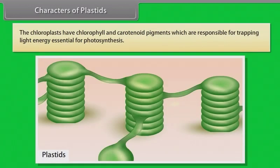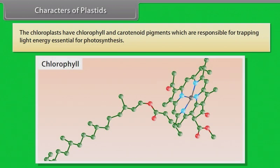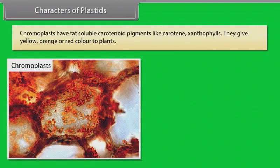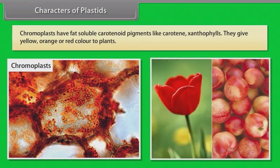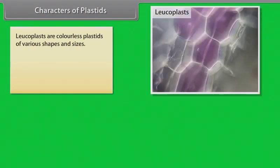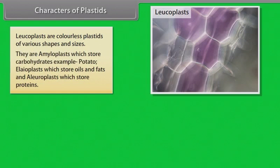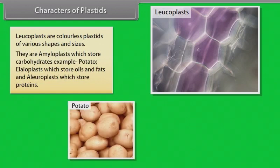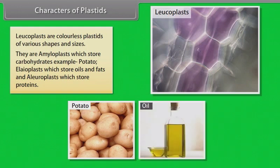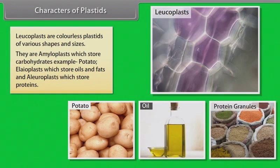Chloroplasts have chlorophyll and carotenoid pigments which are responsible for trapping light energy essential for photosynthesis. Chromoplasts have fat-soluble carotenoid pigments like carotene and xanthophylls, and they give yellow, orange or red color to plants. Leukoplasts are colorless plastids of various shapes and sizes. They include amyloplasts which store carbohydrates (e.g., potato), elaioplasts which store oils and fats, and aleuroplasts which store protein.